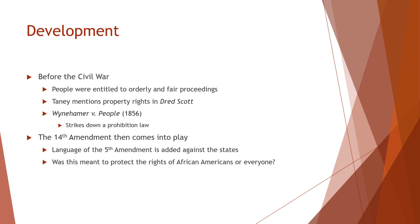Before the Civil War, people were entitled to fair and orderly procedure. Where we start to get more into property rights — there are property rights that we have, you probably saw that with the Contract Clause and you'd see it in the next chapter with the Takings Clause — what about property rights coming in around due process? Can the government interfere in your property rights? I guess it probably depends on who's on the Supreme Court at the time.